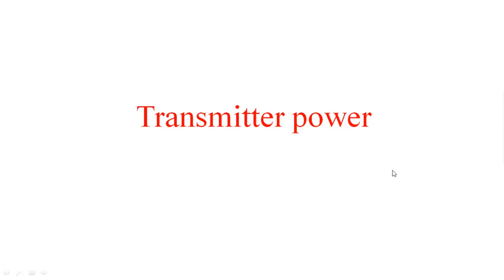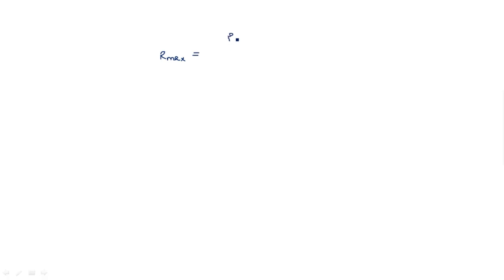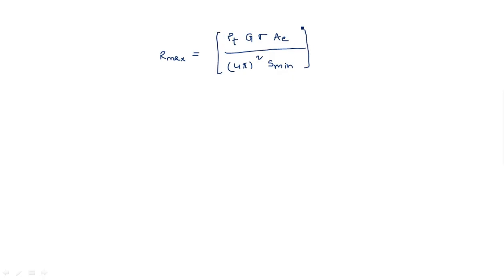Hi everyone. In this video I am going to explain about transmitter power. In the radar range equation, the standard maximum radar range equation R_max is equal to P_t G sigma A_e divided by 4 pi squared S_min, whole to the power 1 by 4.